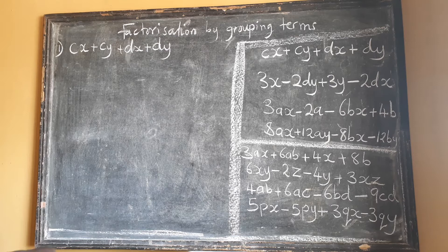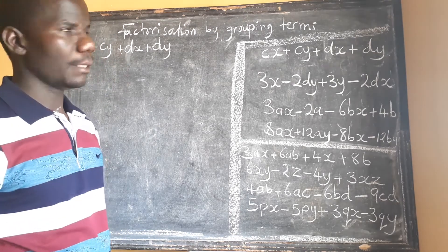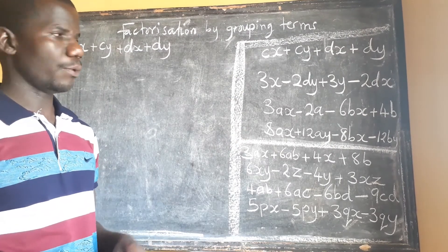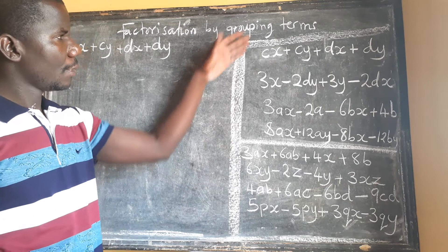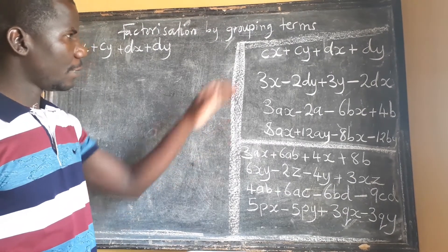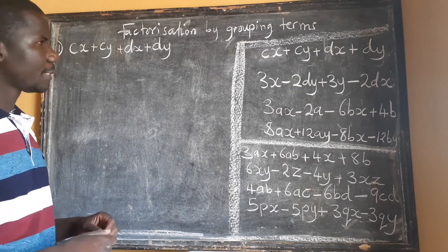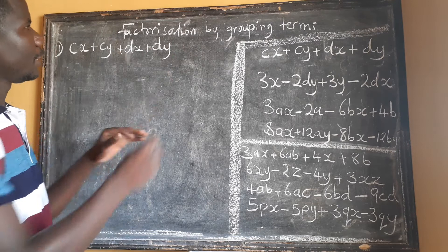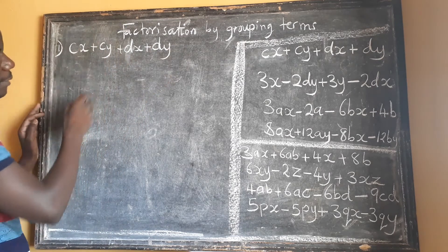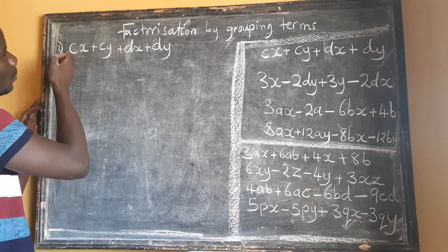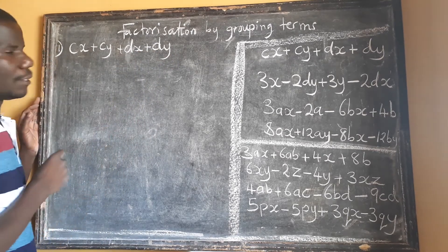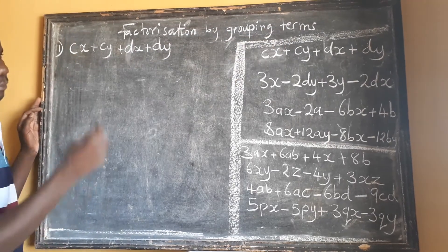Let's look at another method of factorization: factorization by grouping terms. I've copied the questions in advance so we don't waste time. The first four will be examples, then the last four you're going to try out. When you consider this expression, you discover that you do not have a common factor apart from one, so we have to group the like terms in pairs.